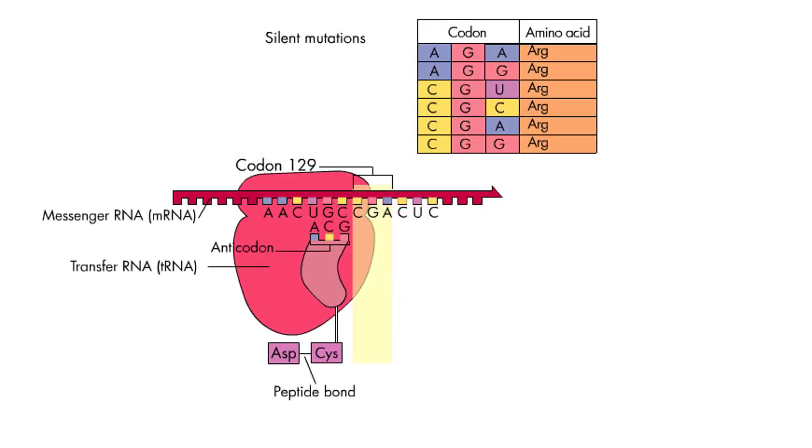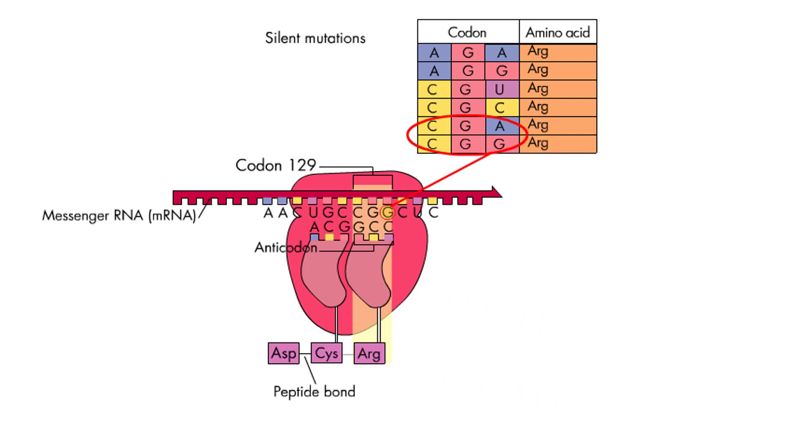Many mutations have no effect at all because the genetic code is redundant. In other words, different codons can code for the same amino acid. Here, in the third base of codon 129, a G is substituted for an A. The substitution has no effect on the protein sequence, since CGG codes for arginine just as CGA does. This is called a silent mutation.